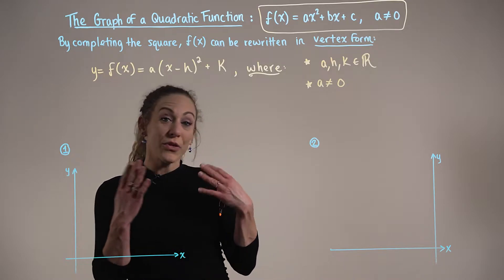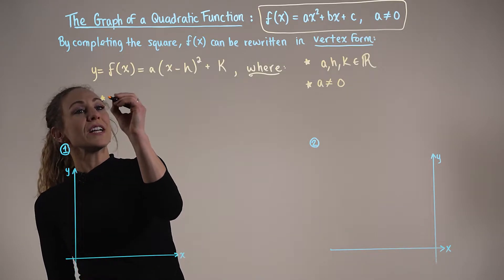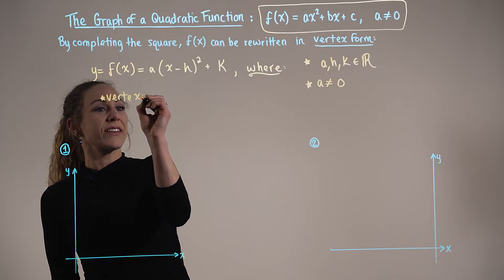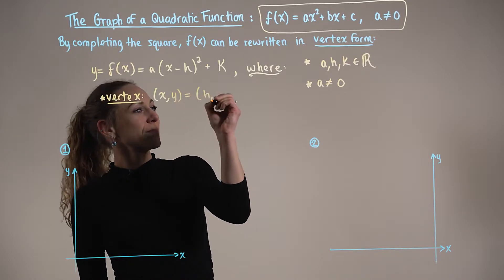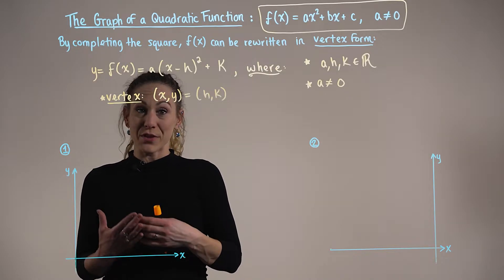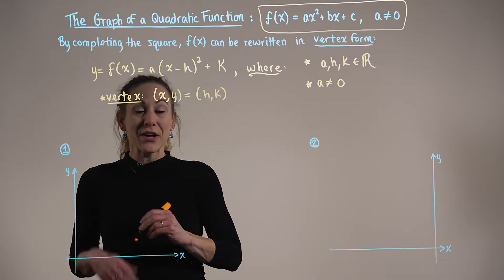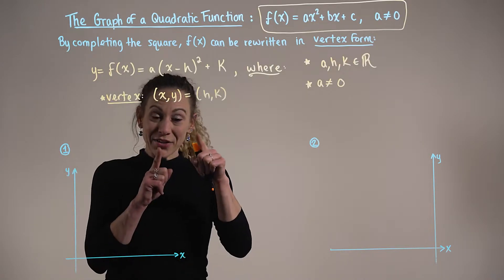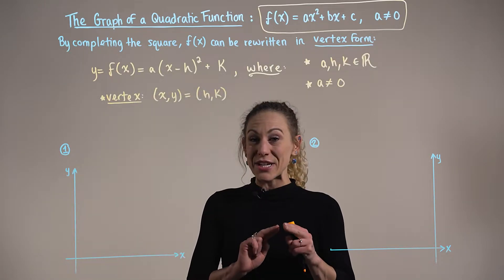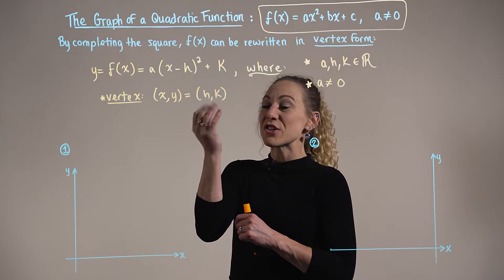The vertex for this quadratic function is defined by the ordered pair (h, k). The vertex is the turning point of the graph, and this is where the graph is changing direction — either from decreasing to increasing, or from increasing to decreasing.